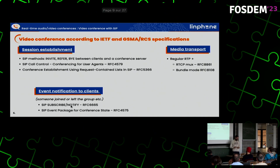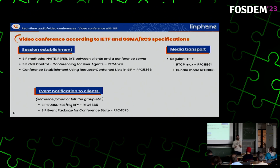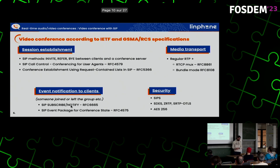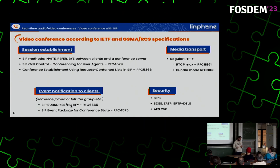On the media side, it's regular RTP. For this video conferencing project, we added support for two important RFCs about bundling all the media streams into the same socket, in order to avoid having too many RTP sockets and RTP streams per client. Regarding security, it's regular SIP TLS for the signaling. For the media path, it's either SDES where the symmetric key is set in the SDP, or SRTP-DTLS. For the RTP itself, it's standard AES.